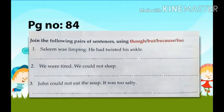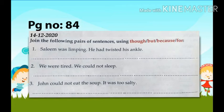Now we will do the exercise. Join the following pairs of sentences using 'though', 'but', 'because', and 'for'. Remember: when we join sentences using conjunctions, we remove the full stops from the middle of the sentences. Let's begin. Sentence number 1: 'Salim was limping. He had twisted his ankle.' Limping means walking slowly; twisted means mur jana; ankle means takhna.